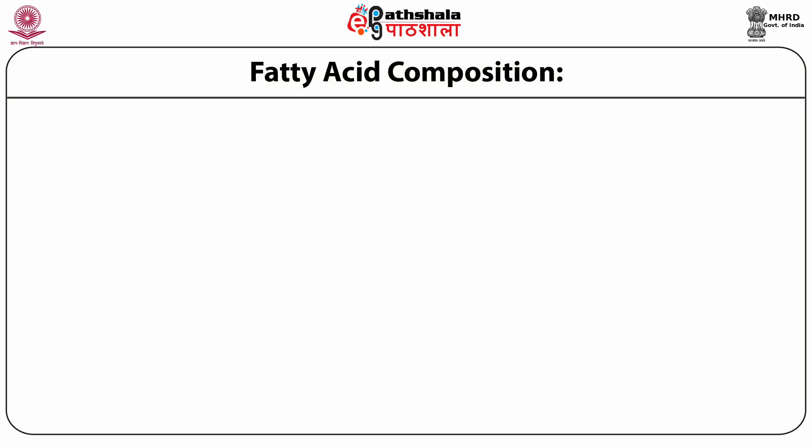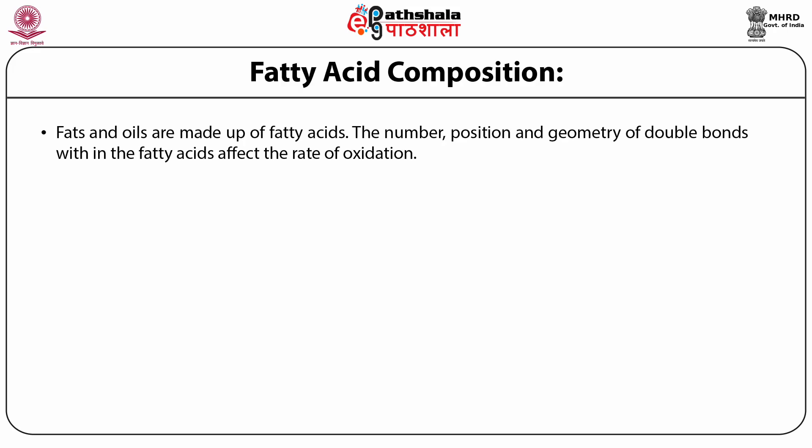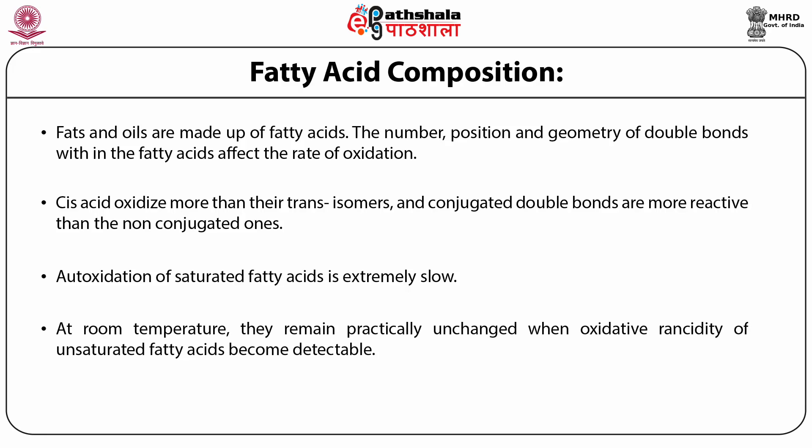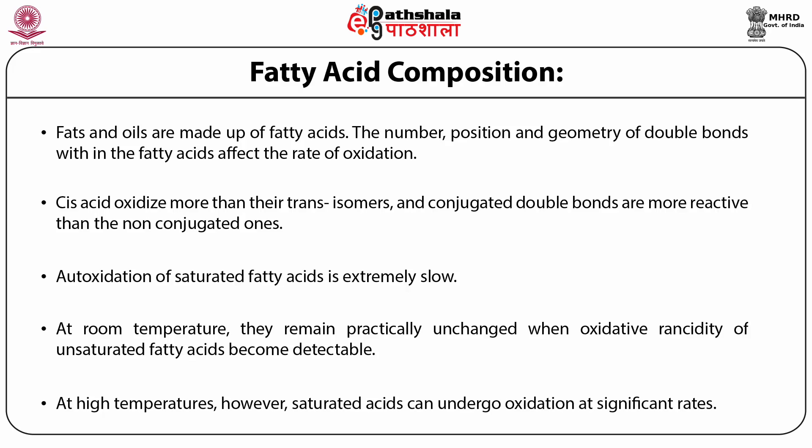The first factor affecting lipid oxidation is fatty acid composition. Fats and oils are made up of fatty acids. The number, position and geometry of double bonds within the fatty acids affect the rate of oxidation. Cis acids oxidize more than their trans isomers and conjugated double bonds are more reactive than the non-conjugated ones. Auto-oxidation of saturated fatty acids is extremely slow. At room temperature, they remain practically unchanged when oxidative rancidity of unsaturated fatty acids becomes detectable. At high temperatures, however, saturated acids can undergo oxidation at significant rates.